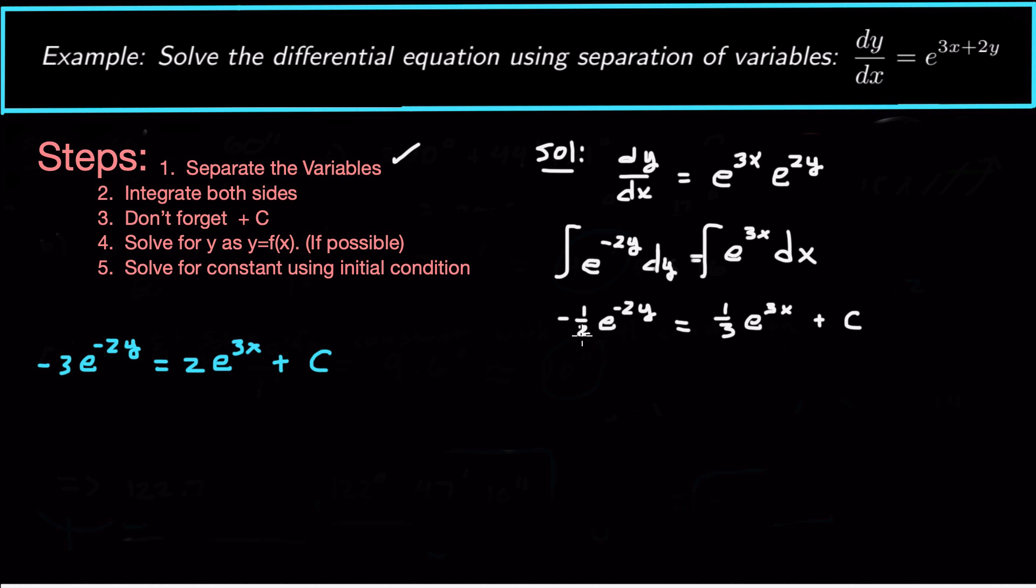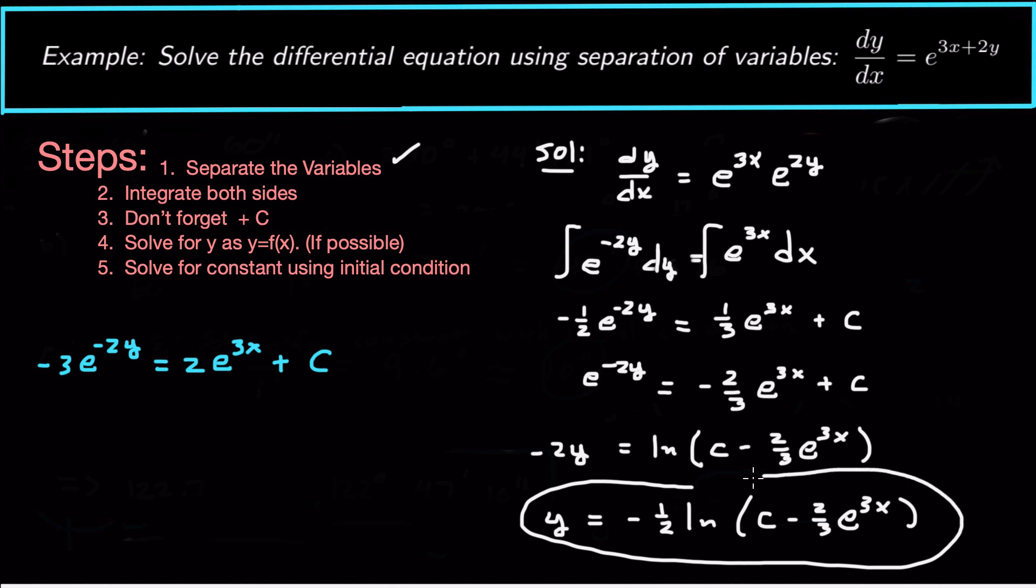So this is one way you could see the answer. That's in terms of x. So what I'm going to do is I'm going to multiply this by negative 2, multiply both sides by negative 2 to get e to the negative 2y equals negative two thirds e to the 3x plus C. Now I'm going to take the natural log of both sides so that'll give me negative 2y equals natural log of C minus two thirds e to the 3x, and then y can be explicitly in terms of x as negative one half natural log of C minus two thirds e to the 3x.